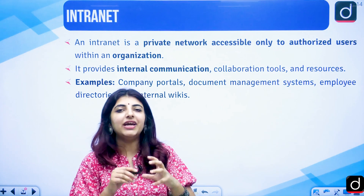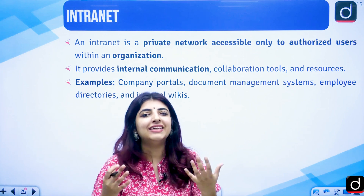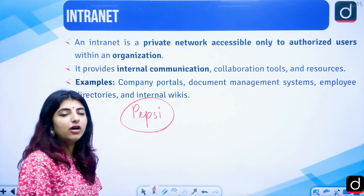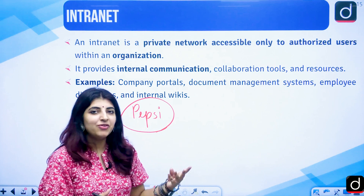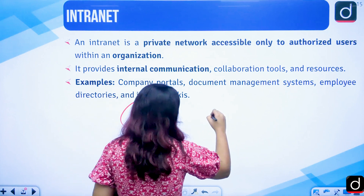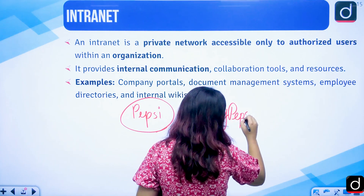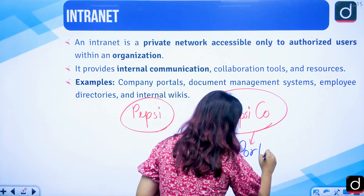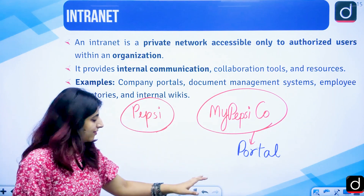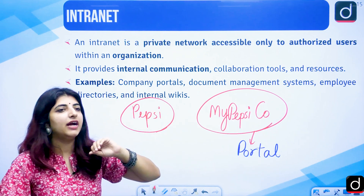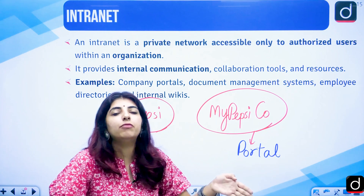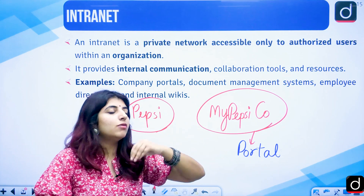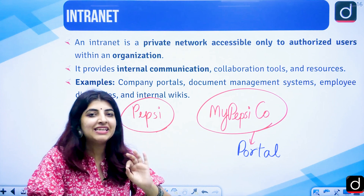Intranet is a type of network which is owned by a particular organization. For example, Pepsi has a portal titled 'My PepsiCo'. The information on this portal regarding the company — for their employees who need to gather information — is meant only for the employees and staff of that particular organization. No other person from outside is going to get access to those documents. So intranet is 'in' — meaning in the company or the organization.